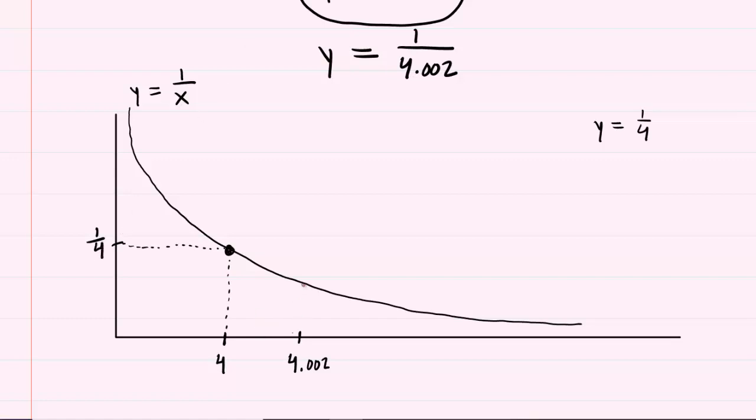Next, you'll notice that there is a point that we can color in red located right here. Now the x coordinate of that point would be 4.002, and the y coordinate is exactly what we're trying to estimate in this problem. We don't know the y coordinate. We know that that would be 1 over 4.002, but the actual value is what we're trying to estimate.